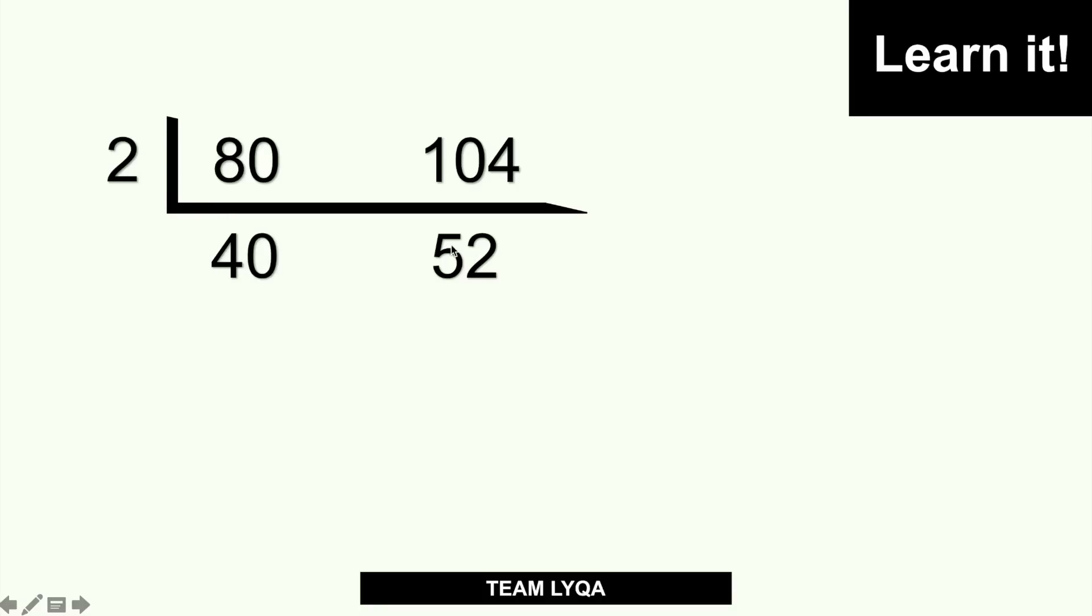Okay? Now, since both of them are still even numbers, I can do it again, divide them by 2. So again, I'll add another rung of the ladder. And then, I'll put 2 here, which is again, a factor of both. And then, I'm going to repeat the process. So, 40 divided by 2 would be 20. 52 divided by 2 is 26.